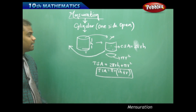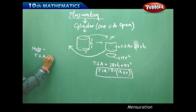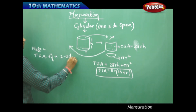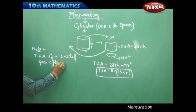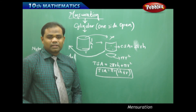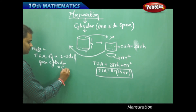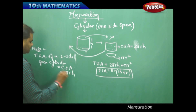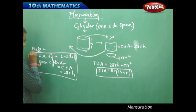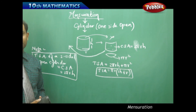For a two-sided open cylinder, neither circular face exists, so the total surface area is nothing but the curved surface area alone, which is 2πrh square units.